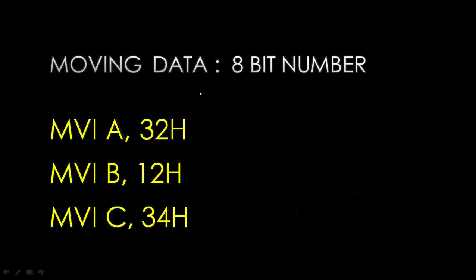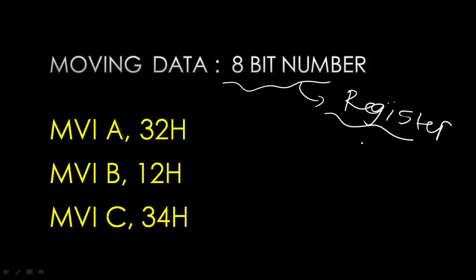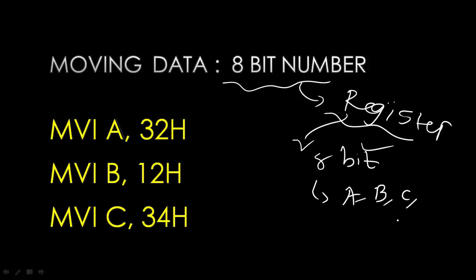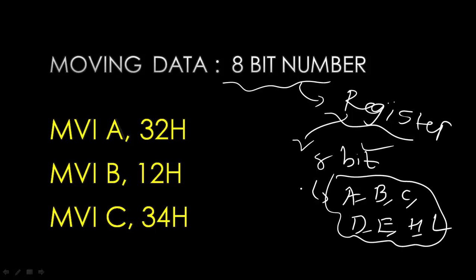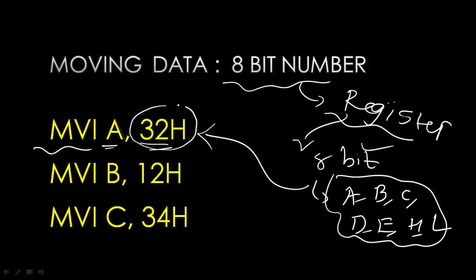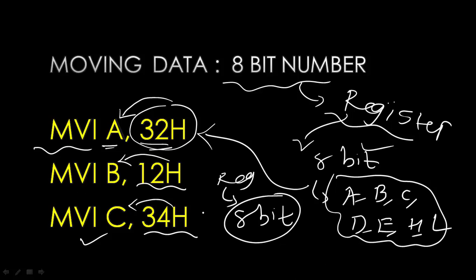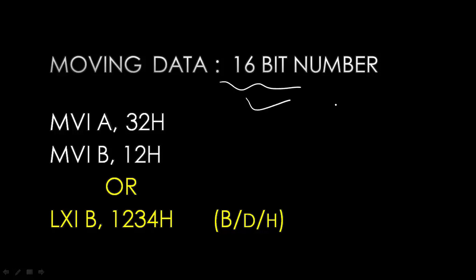The first thing we can do is store an 8-bit number in a register. The register must be an 8-bit register — we have A, B, C, D, E, H, and L. The instruction is MVI (Move Immediate). For example: MVI A, 32H transfers 32H to A; MVI B, 12H transfers 12H to B; MVI C, 34H transfers 34H to C.